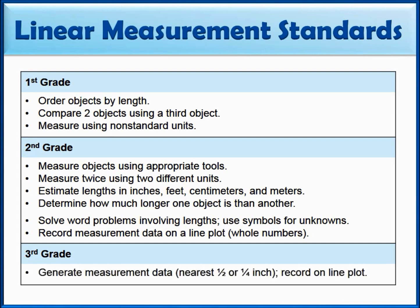In third grade, they're also going to generate measurement data and record it on a line plot, but here they're going to measure to the nearest half or quarter — for example, the nearest half inch or quarter inch. While it appears that measurement is very light in third grade, this is not the case. The major components of the third grade measurement relate to area and perimeter, so our linear measurement standards in first and second grade are the prerequisites for those area and perimeter standards.